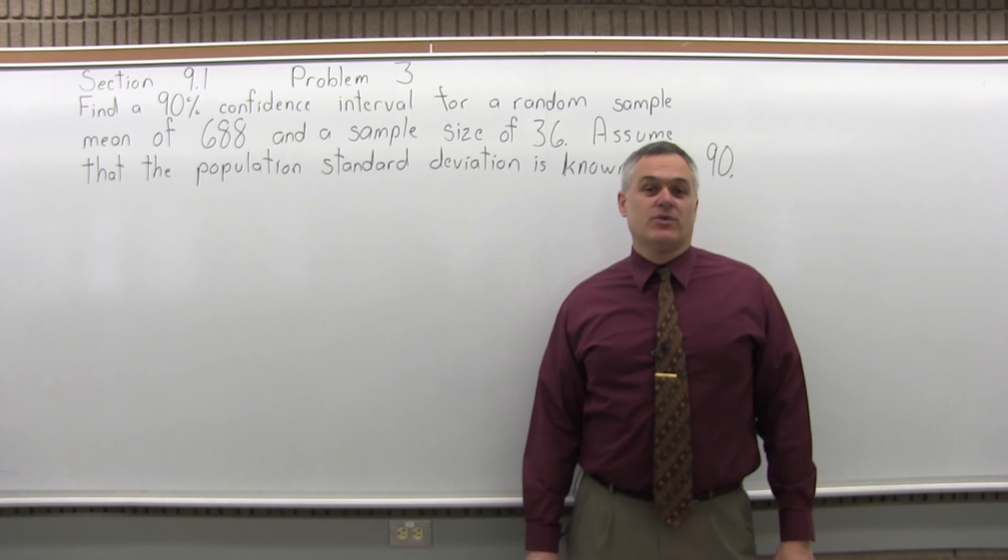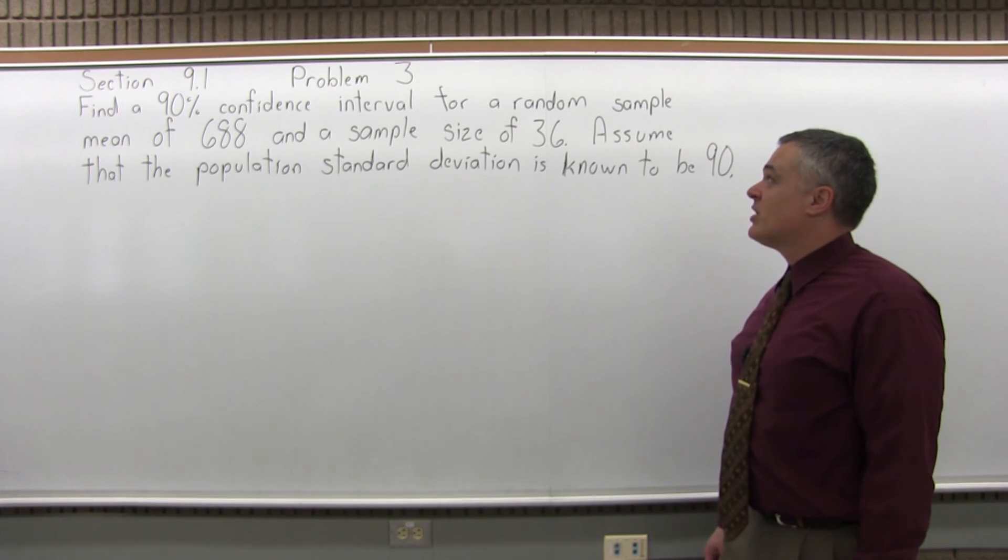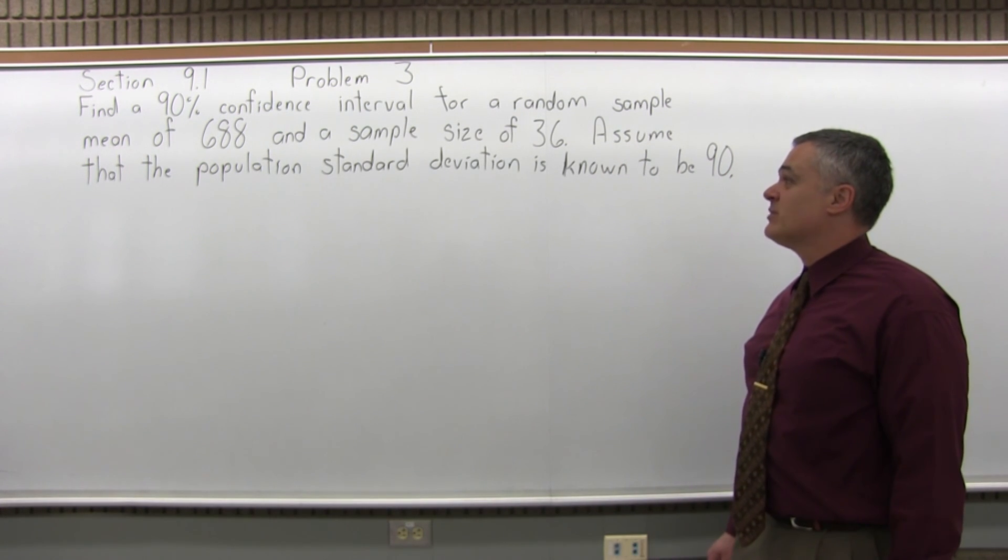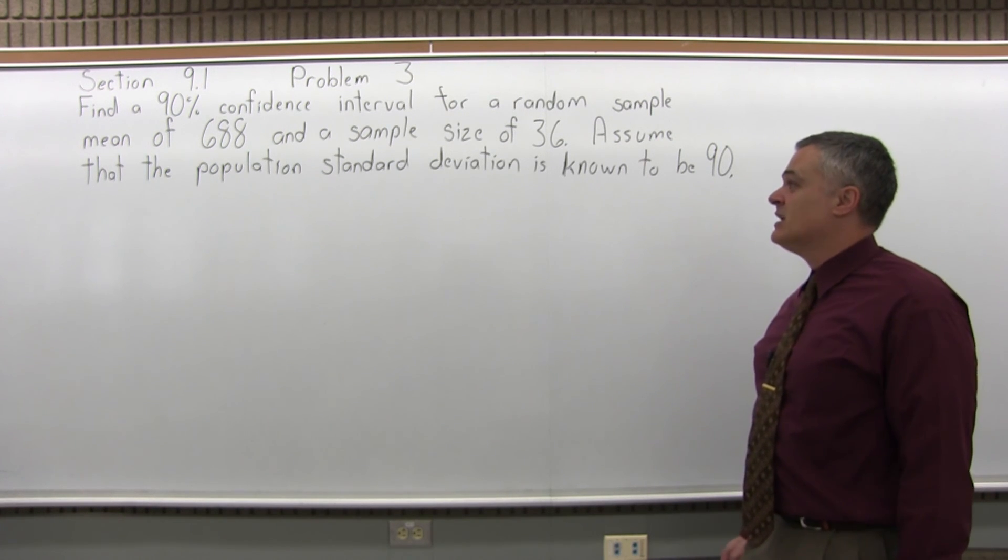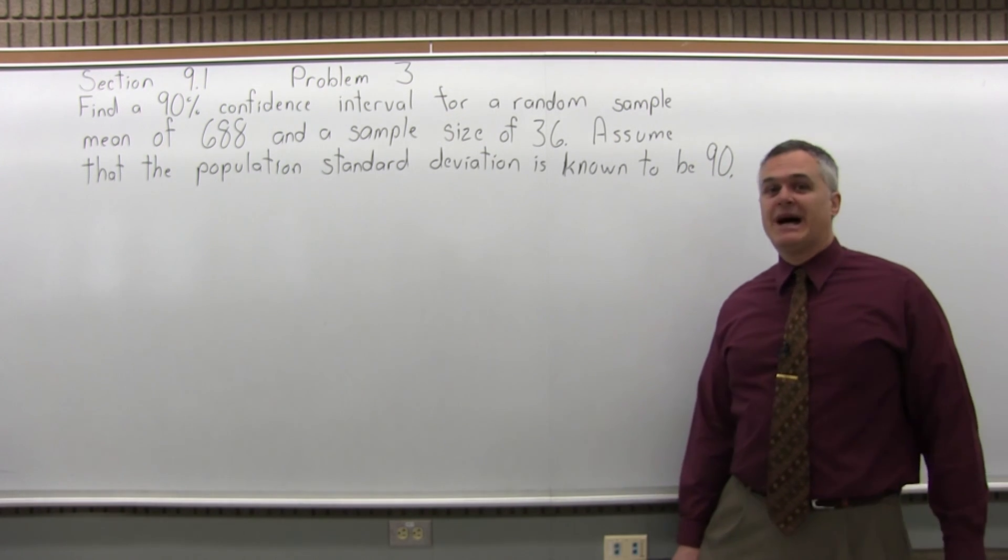This is Section 9.1, Problem 3. It says, find a 90% confidence interval for a random sample with a mean of 688 and a sample size of 36. Assume that the population standard deviation is known to be 90.